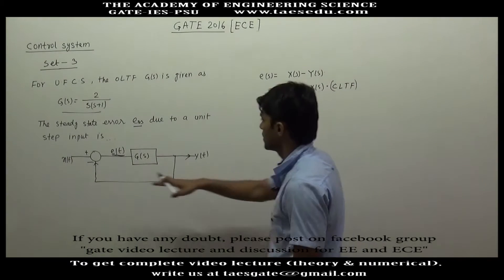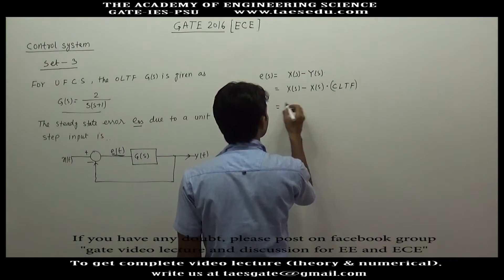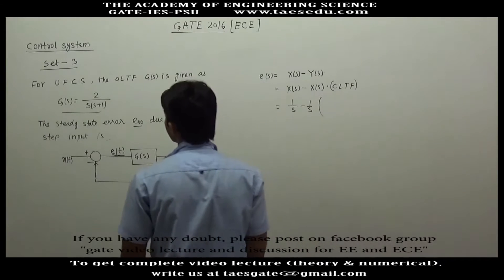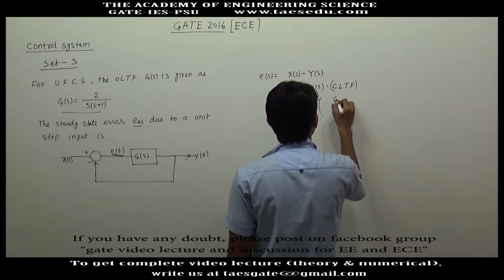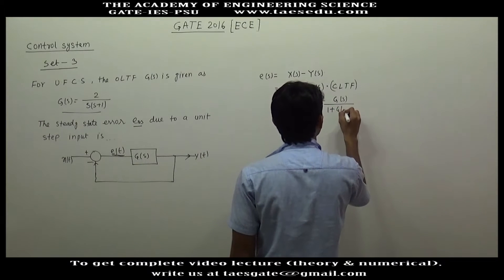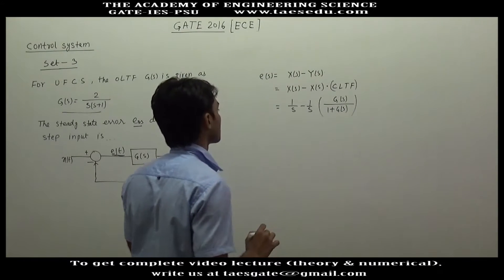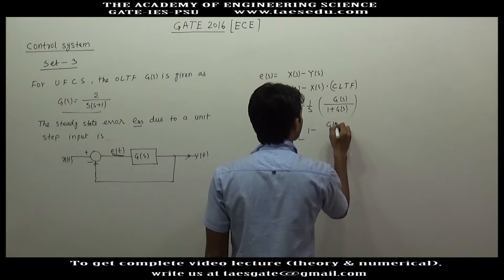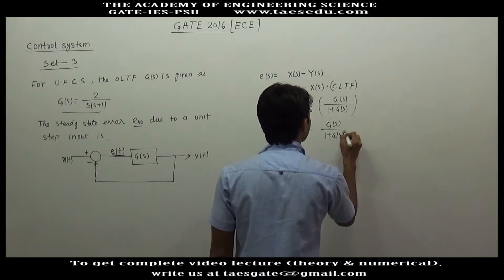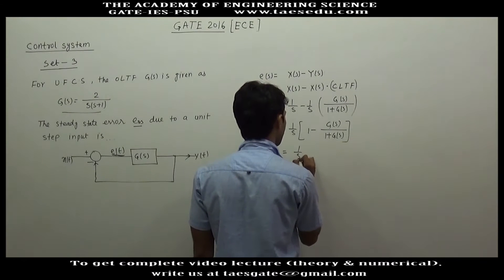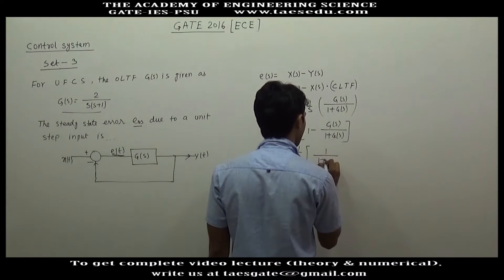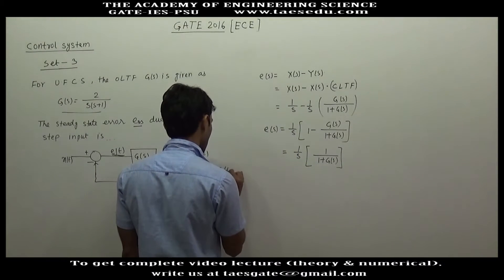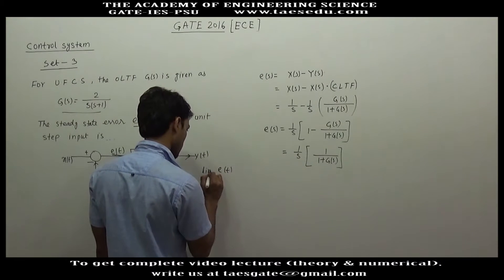Y(s) equals input times the closed-loop transfer function. With X(s) = 1/s, E(s) = X(s) minus Y(s) = (1/s) minus (1/s)·G(s)/(1 plus G(s)). This simplifies to E(s) = (1/s) · 1/(1 plus G(s)).